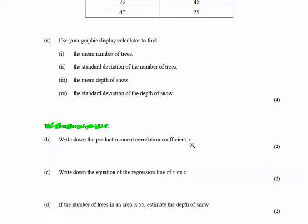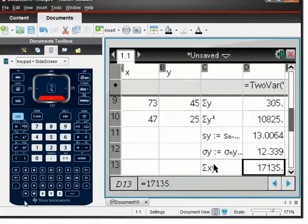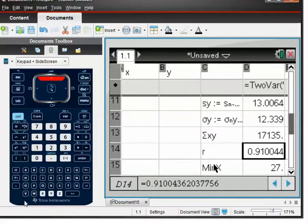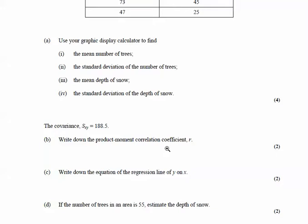The next part says: write down the product moment correlation coefficient. That's asking for the value of Pearson's product moment correlation coefficient, which has the letter r. If we go back to the calculator and scroll down, we can see r equals 0.91. So we write 0.91 — that's the Pearson's product moment correlation coefficient.